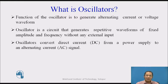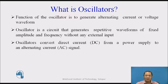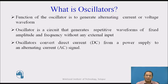What is an oscillator? The function of an oscillator is to generate alternating current or voltage waveforms. One can also define an oscillator as a circuit that generates a repetitive waveform of fixed amplitude and fixed frequency without any external input. The output of the oscillator is a waveform which is repeated and has a fixed amplitude and a fixed frequency.